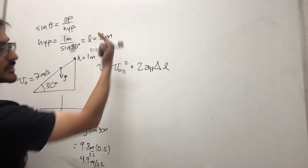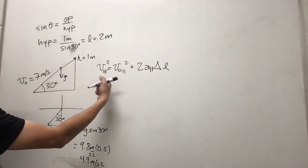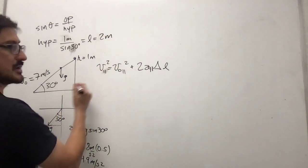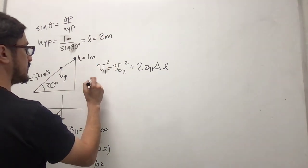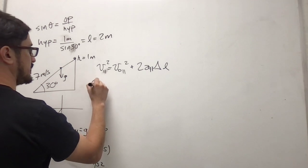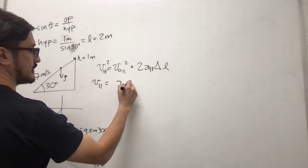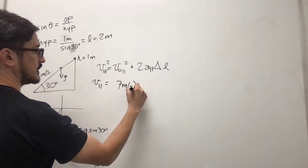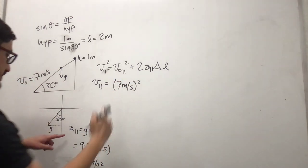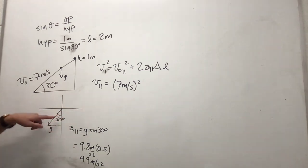And delta l, delta l is the 2 meters. So we can basically plug everything in here. And then it's going to be 7 meters per second squared. And this is negative. The other way to see it is...